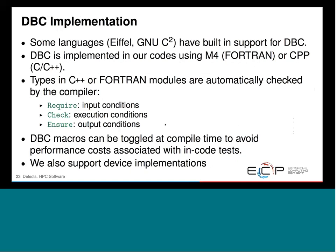Some languages like Eiffel have built-in support for DBC. For us, we implement this using M4 for our small number of Fortran kernels and a C preprocessor for the majority of our C and C++ code. These are toggled at compile time — you can add this testing in there, and some tests are expensive, but they can be removed in your optimized production code, so they impose no cost in actual code performance. One key part of DBC is rigorous type checking. Modern C++ and modern Fortran automatically check types via the compiler. What we do want to check are input conditions, execution conditions, and output conditions.